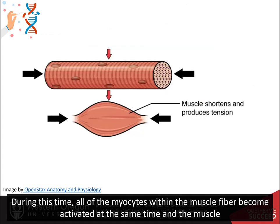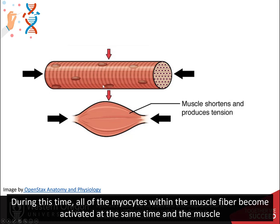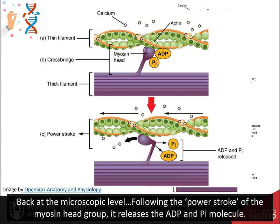During this time, all of the myocytes within the muscle fiber become activated at the same time, and the muscle shortens to the contracted state. Back at the microscopic level, following the power stroke of the myosin head group, it releases the ADP and Pi molecule.